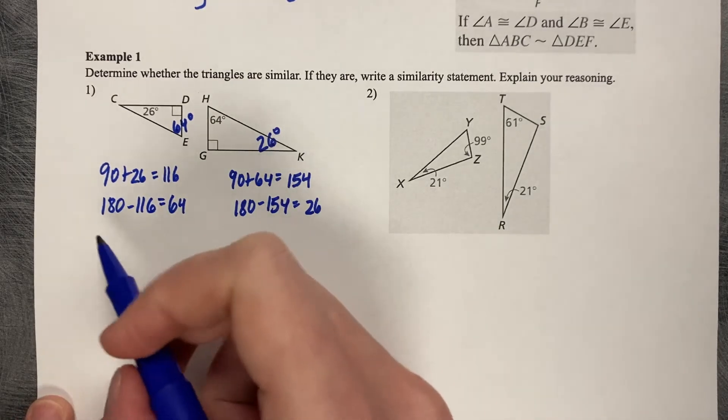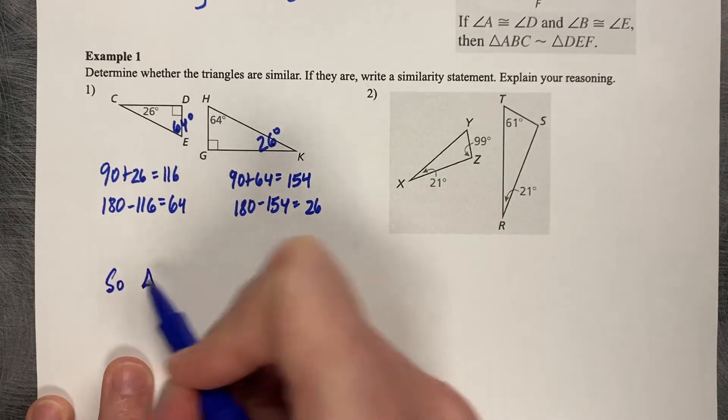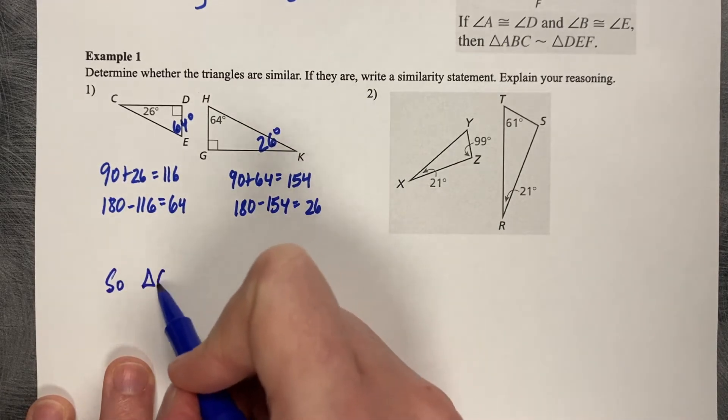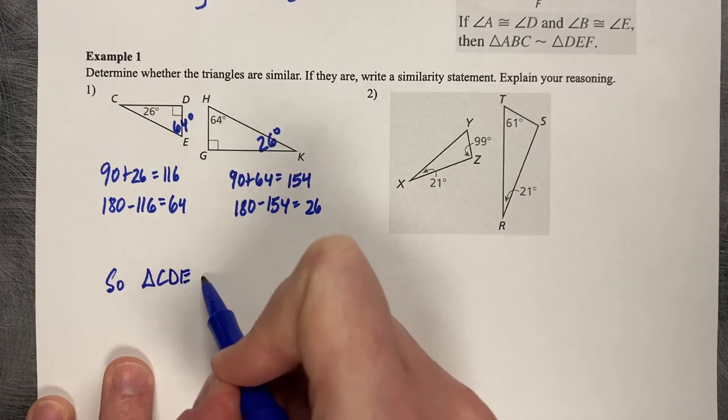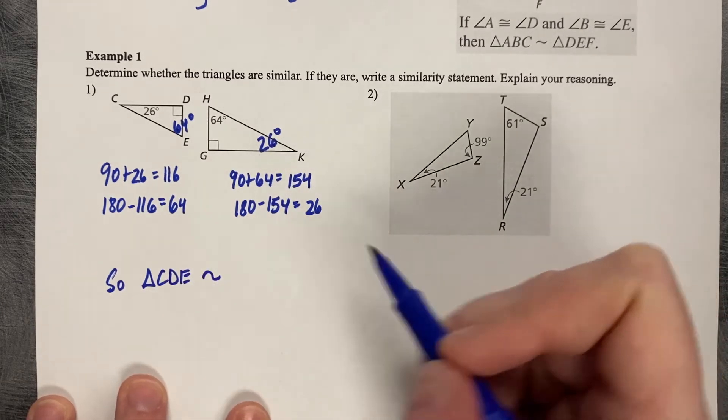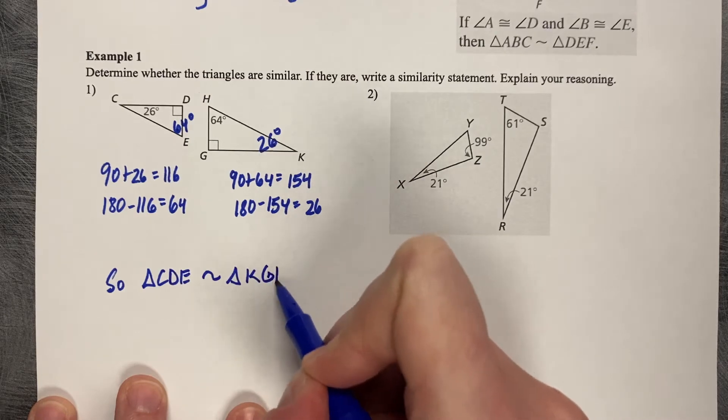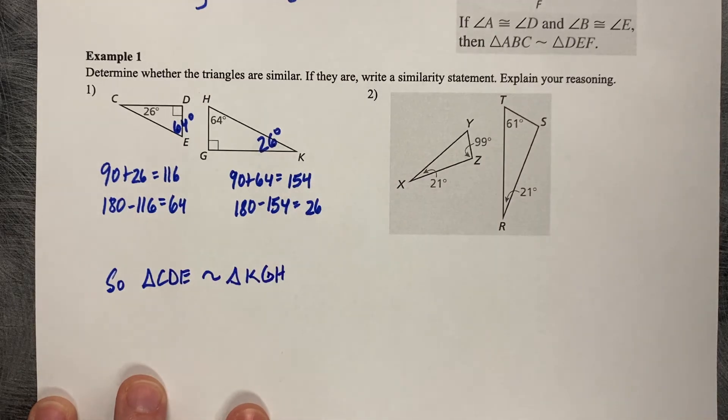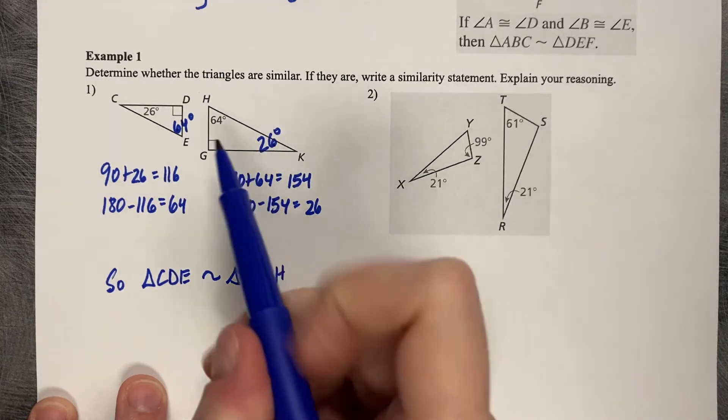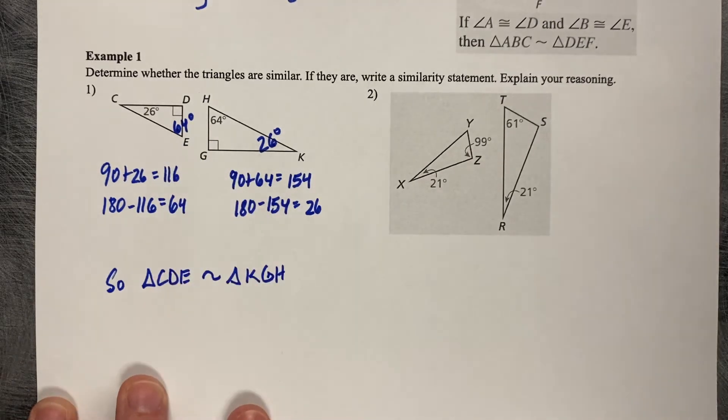So triangle CDE is similar, use the similar symbol, to triangle KGH. That means that their side lengths and angles, their angles are equal and their side lengths are proportionate. They're the same shape, but not the same size.